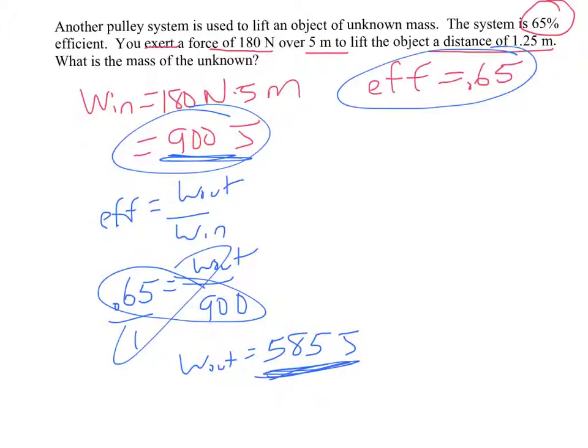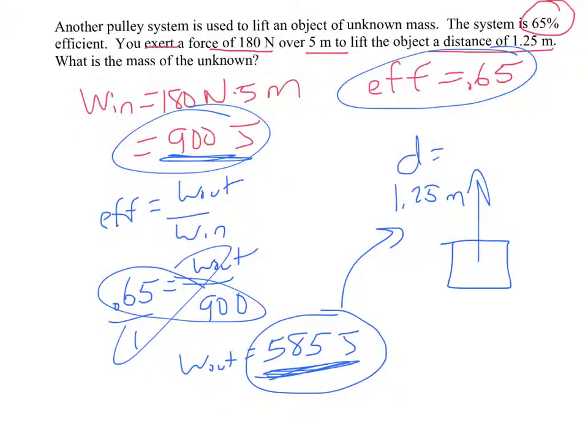But what's this trying to actually figure out? We are lifting some unknown mass a distance of 1.25 meters. And we want to know, what is that mass? So we know that this 585 joules done on this object in lifting at 1.25 meters.